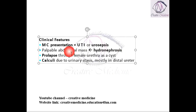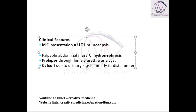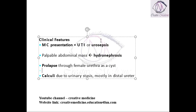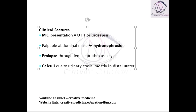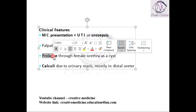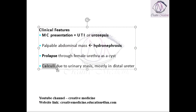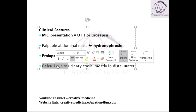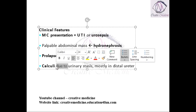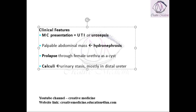This hydronephrosis will present as a palpable abdominal mass. Prolapse can also occur through the female urethra as a cyst. Calculi are also seen, because due to hydronephrosis there is urinary stasis, which causes increased saturation of materials in the urine resulting in calculi formation.